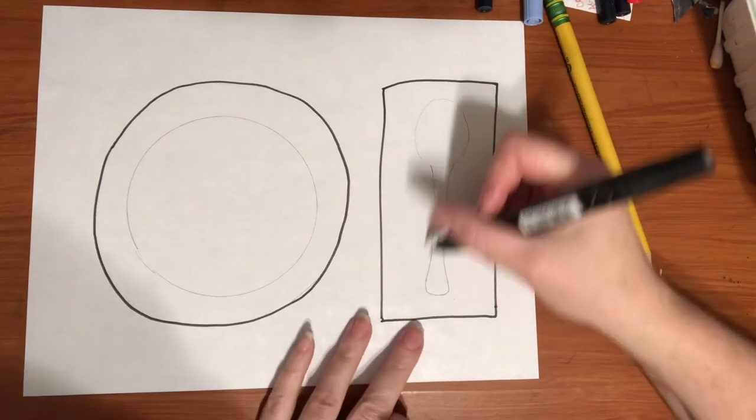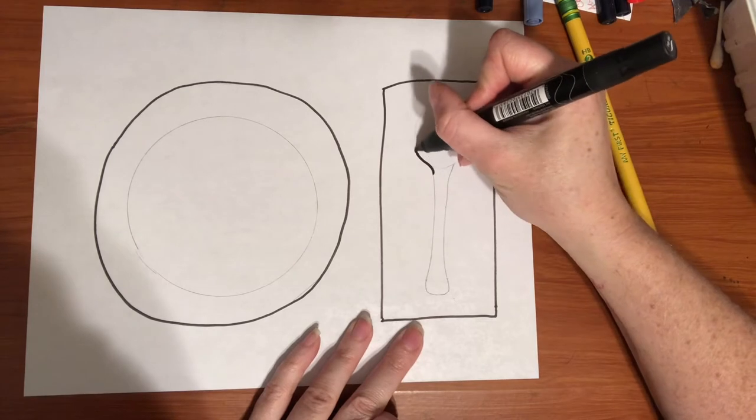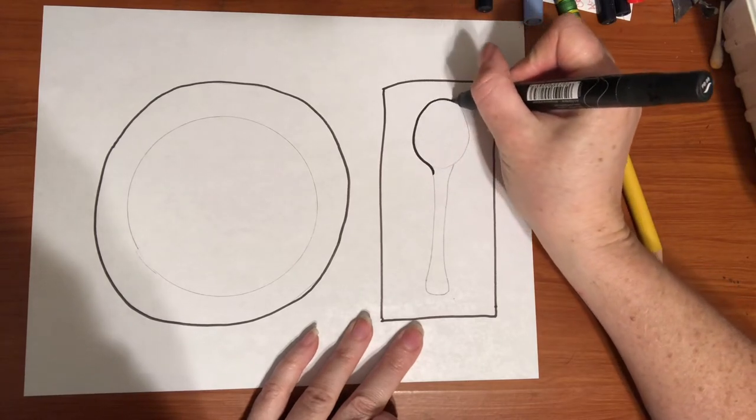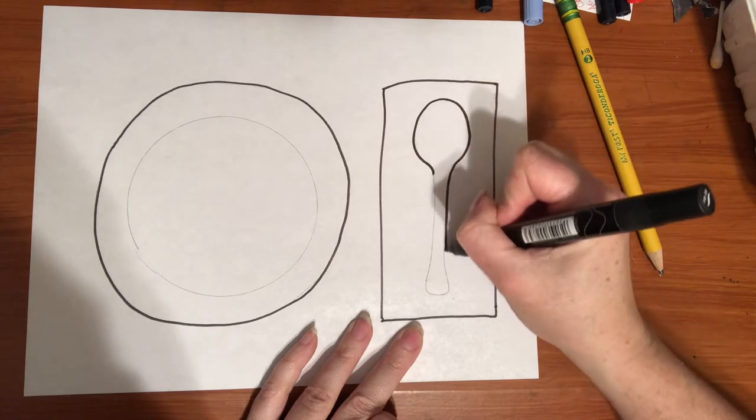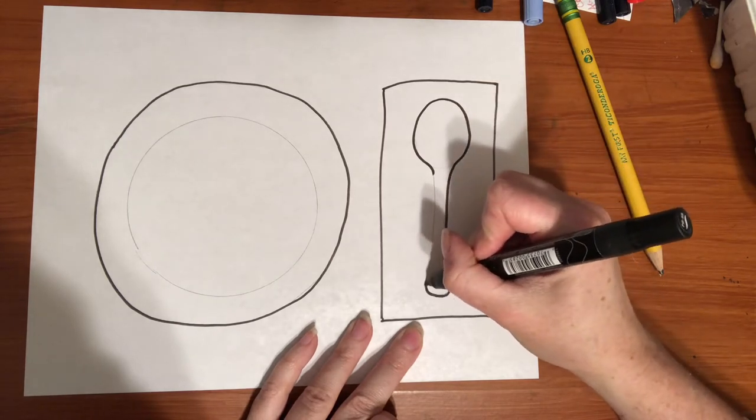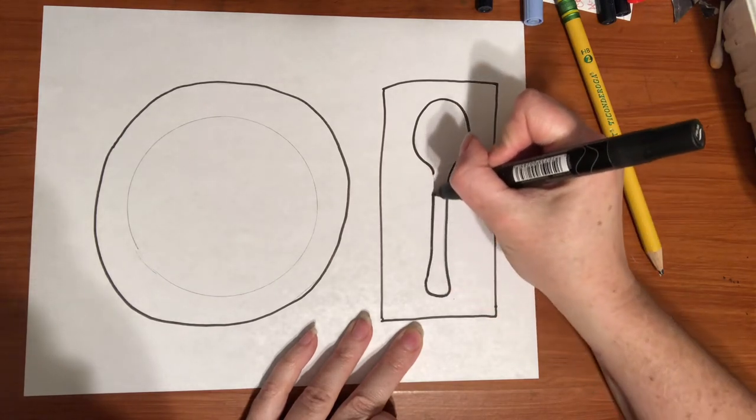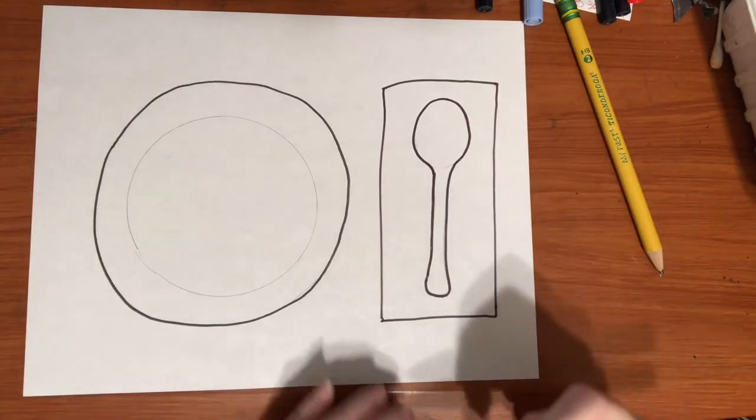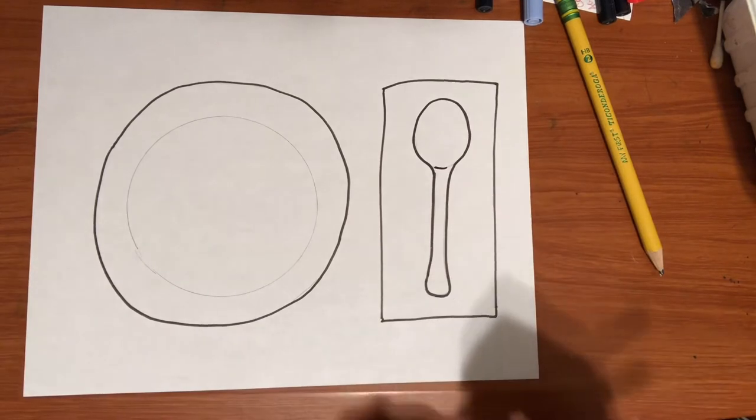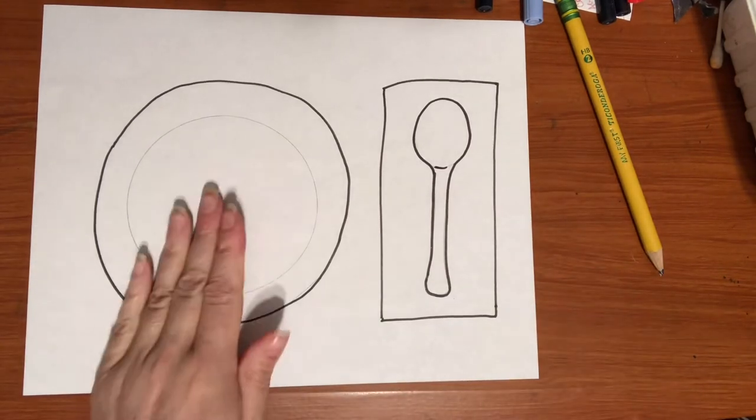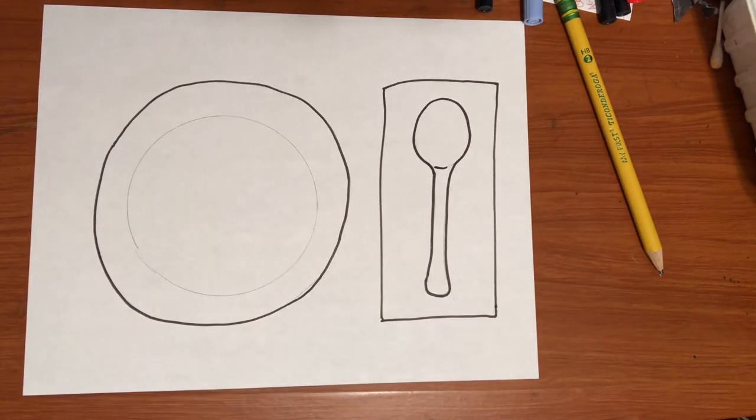We can take our black marker and we can trace around the outside of that spoon also. We drew it in pencil in case we need to erase anything. Now comes the fun part. We've got our spoon and our napkin and our bowl and we are ready for some alphabet soup.